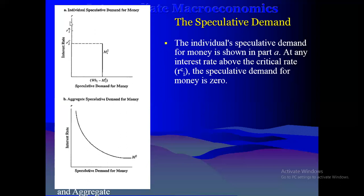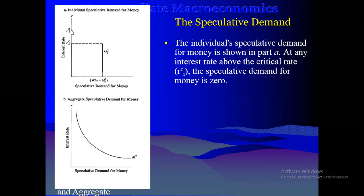Previously, we stated that people try to hold bonds when the interest rate is high because they anticipate that in the near future the interest rate is going to fall, leading to an increase in the face value of their assets. So when the interest rate is above the critical rate, no one is willing to hold any money for speculative purposes — they will all be holding bonds.